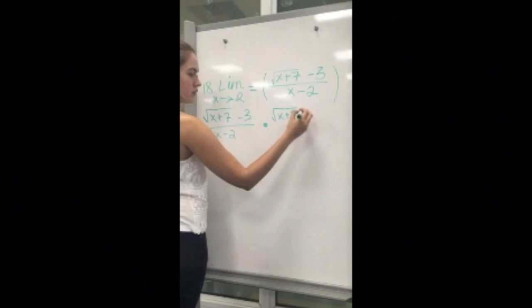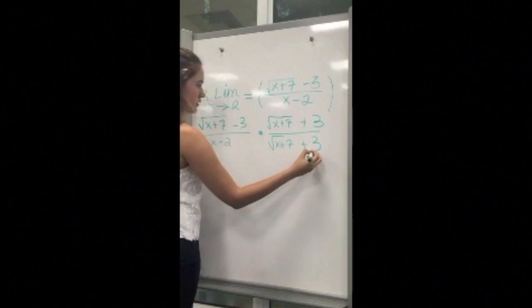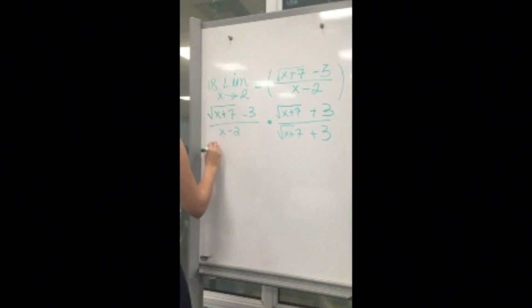You now start multiplying. Square root of x plus 7 times square root of x plus 7 will make the square root cancel, leaving you with x plus 7, and negative 3 times positive 3 will give you negative 9.